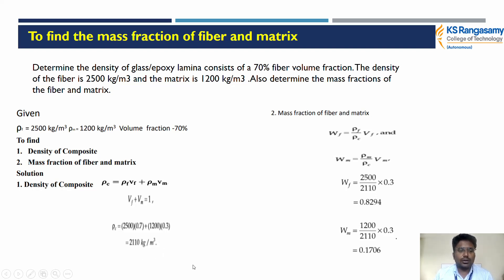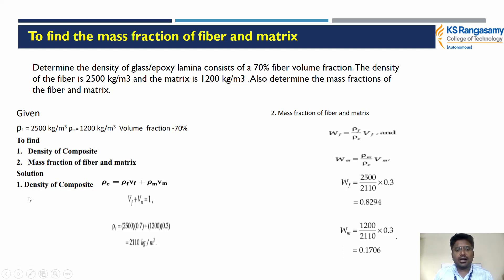Second, we calculate the mass fraction using the formula: Wf = (ρf·Vf) / ρc. Substituting, we get Wf = 0.8294, and similarly the weight of the matrix Wm = 0.1706. Finally, from this problem we find the density of the composite, and that the weight of the fiber is greater compared to the weight of the matrix — confirming that fiber is the load-carrying member and the matrix is the load transfer medium.